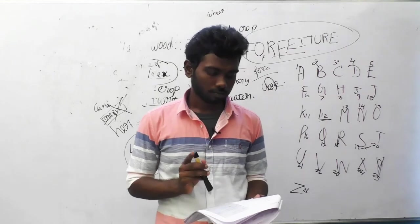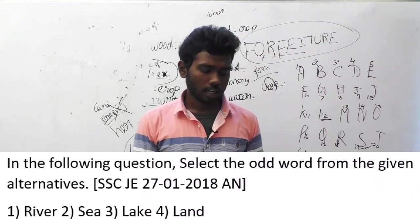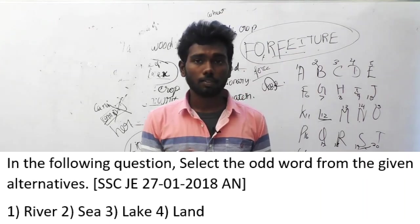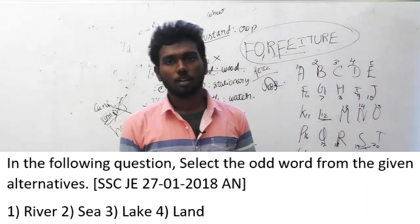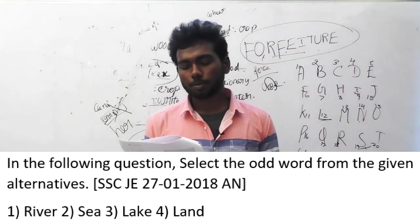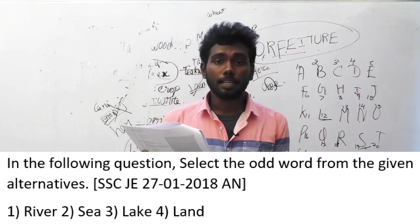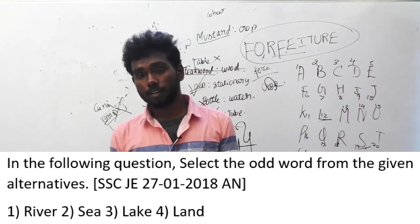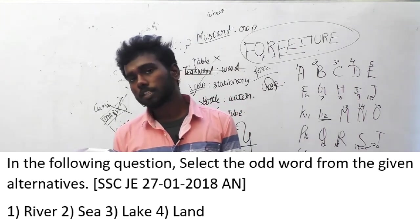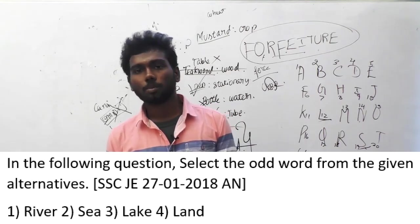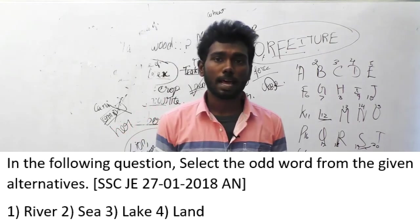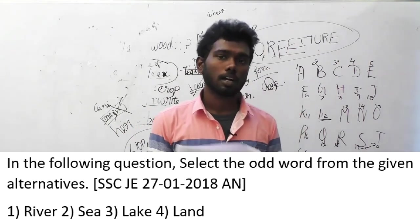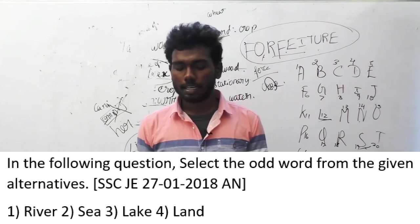Question 159. In the following question, select the odd word from the given alternatives. This question was asked in SSC JE, 27th January 2018, afternoon session. Options are: option A river, option B sea, option C lake, option 4 land. River, sea, and lake are water bodies. Land is a land area, not a water body. So land is the odd option. The answer is option D, land.